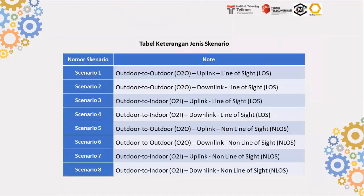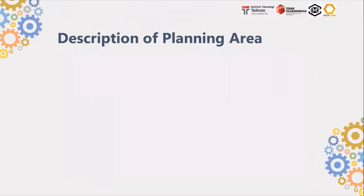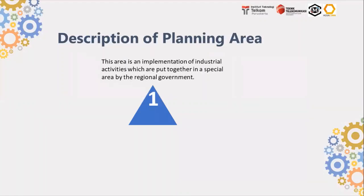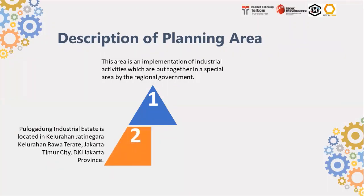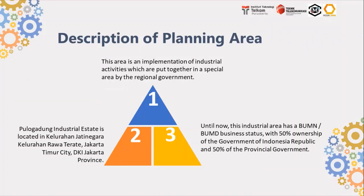The scenario types for this research are outdoor to outdoor, outdoor to indoor, uplink, and downlink. For the description of the planning area, this area is an implementation of industrial activities put together in a special area by the regional government. The area is located in Kelurahan Jatinagara and Kelurahan Rawatera, Jakarta Timur City, DKI Jakarta Province. Until now, this industrial area has a BUMN or BUMD business status with 50% ownership by the Government of the Republic of Indonesia and 50% by the provincial government.